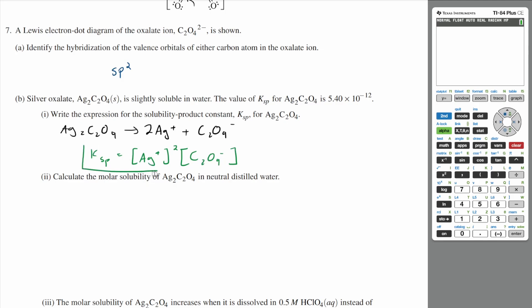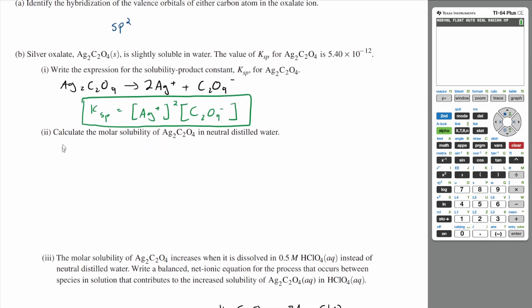Let me box this and then we can move on to part ii. Calculate the molar solubility of Ag2C2O4 in neutral distilled water. In order to calculate the molar solubility, all we have to do is replace our concentrations with X's. So our KSP, let's write it down again, is [Ag+]^2 times [C2O4^2-].